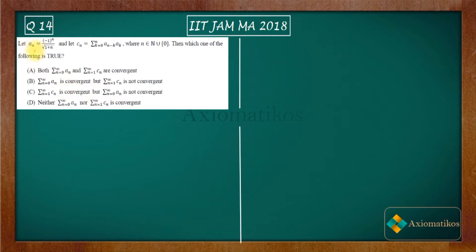We have a sequence aₙ and a sequence cₙ which is defined on the basis of aₙ, where n is a whole number, and we need to determine which one of the following is true. We have to check whether the series corresponding to aₙ and the series corresponding to cₙ are convergent or not.